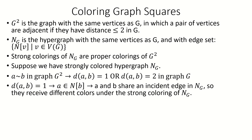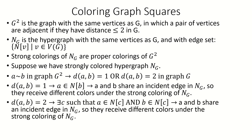If they were at distance two, then there's some vertex C that they're both adjacent to, meaning both A and B are in C's closed neighborhood, which again means there's an edge that contains A and B in the neighborhood hypergraph. So they receive different colors under our strong coloring.